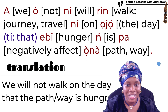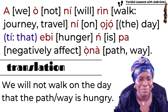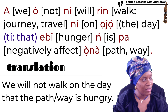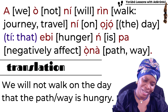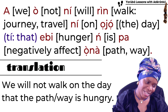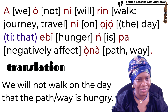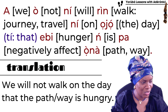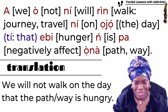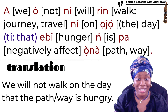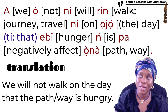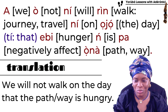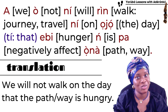When you put those words together — the English words we've assigned to each Yoruba word — we get: 'We will not walk on the day that hunger is negatively affecting the path or way.' That's the raw transliteration. Or simply, if you want to translate it: 'We will not walk on the day that the way or path is hungry.'